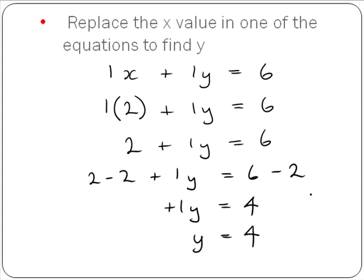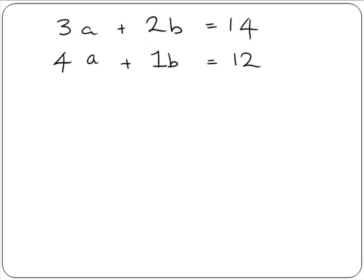So we're left with y equals 4. Now we have a value for x and y, so our solution set is (2, 4). Let's try another example: 3a plus 2b equals 14 and 4a plus 1b equals 12.